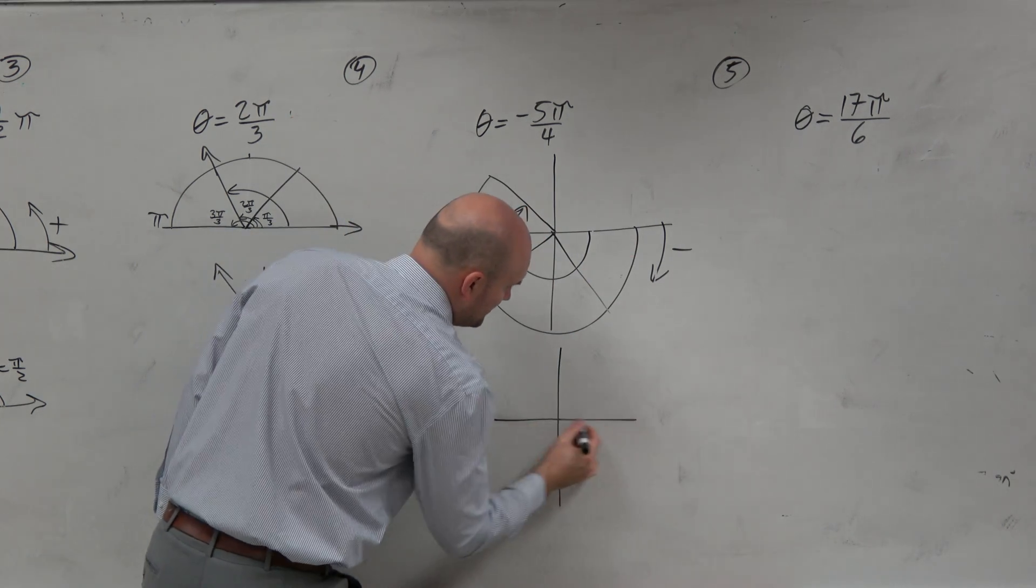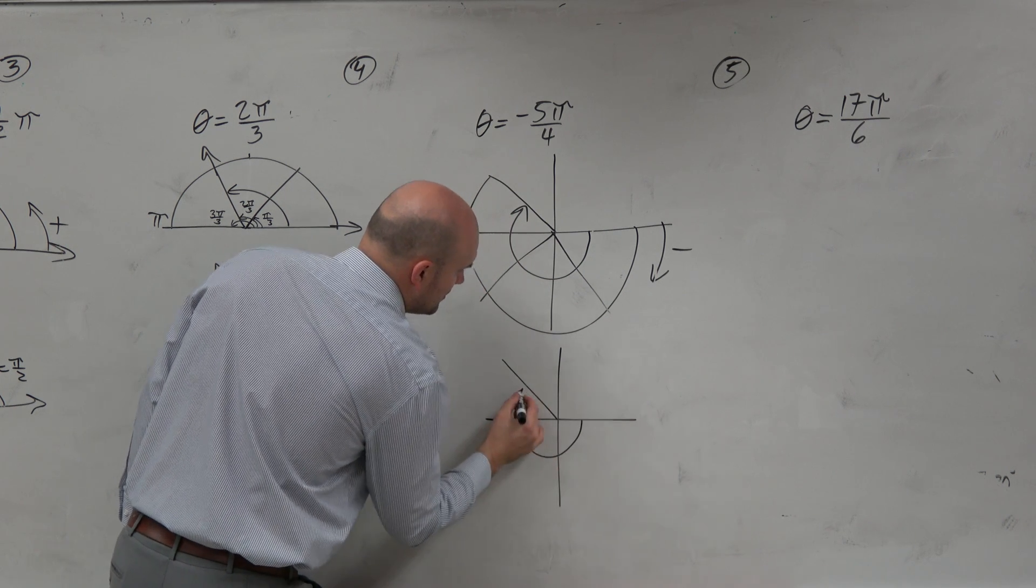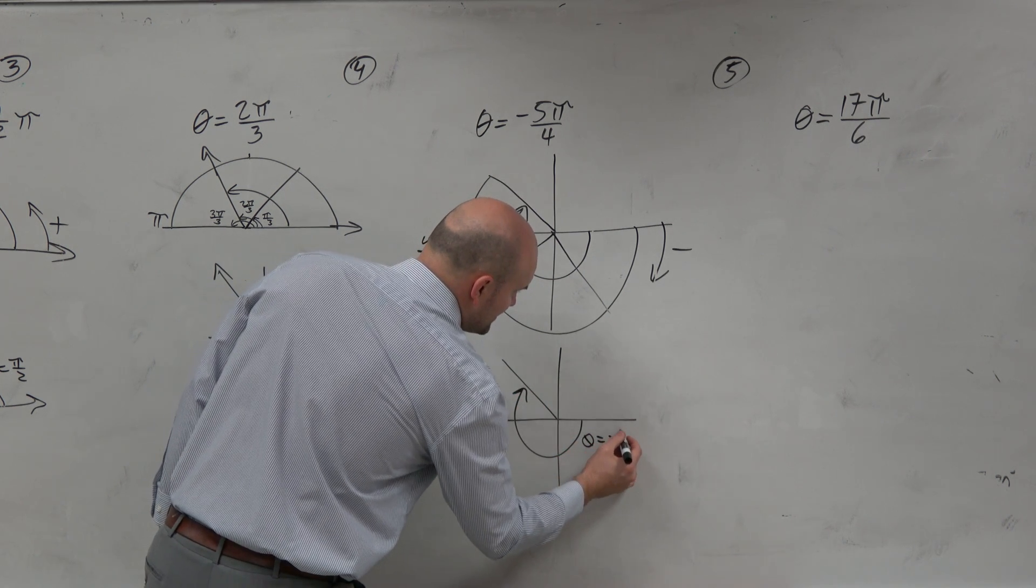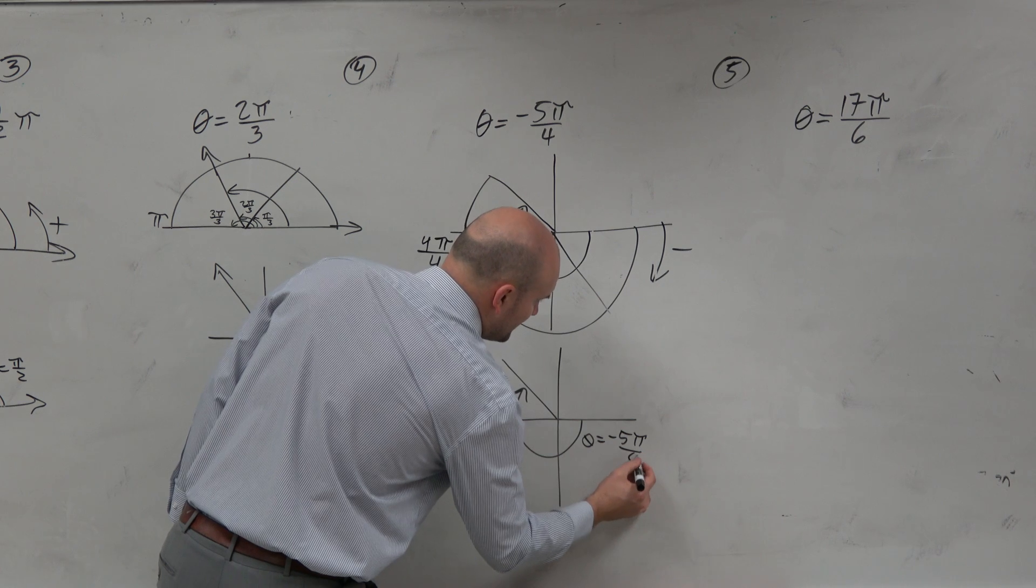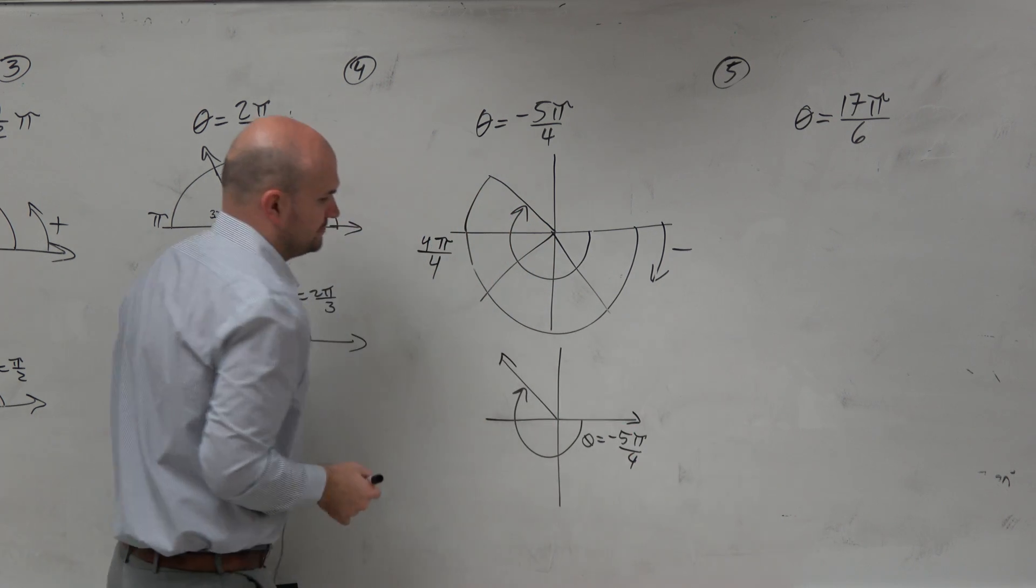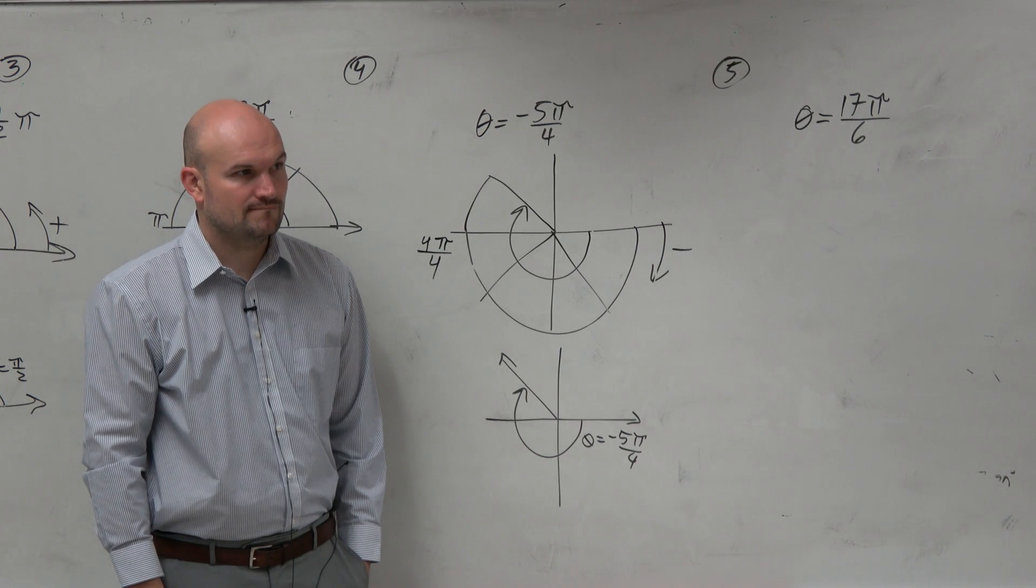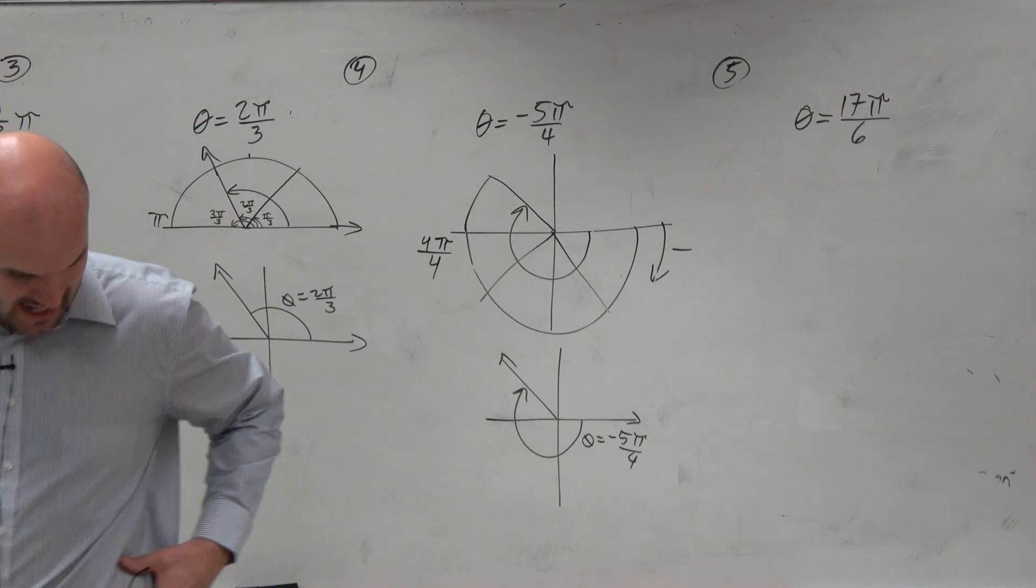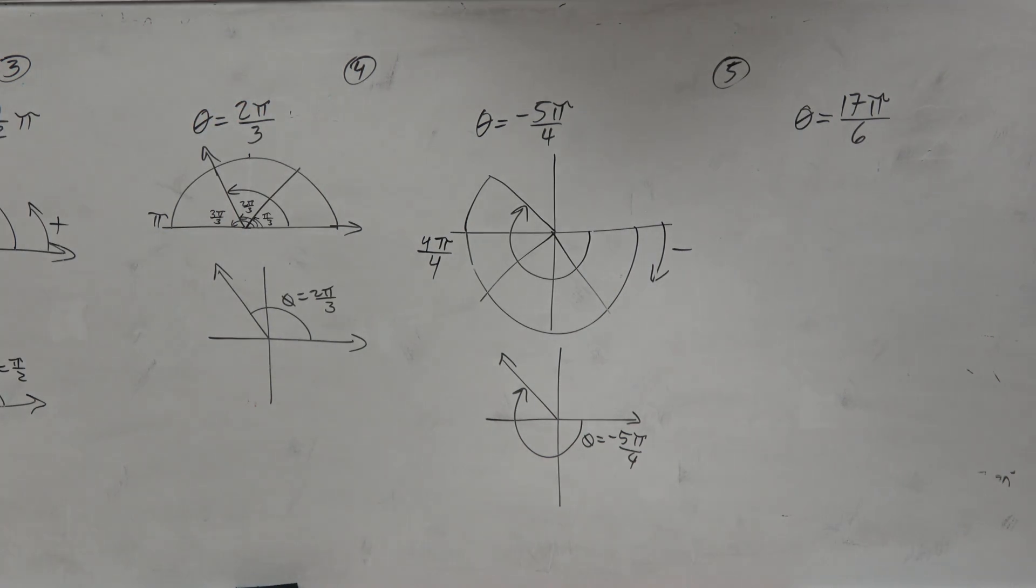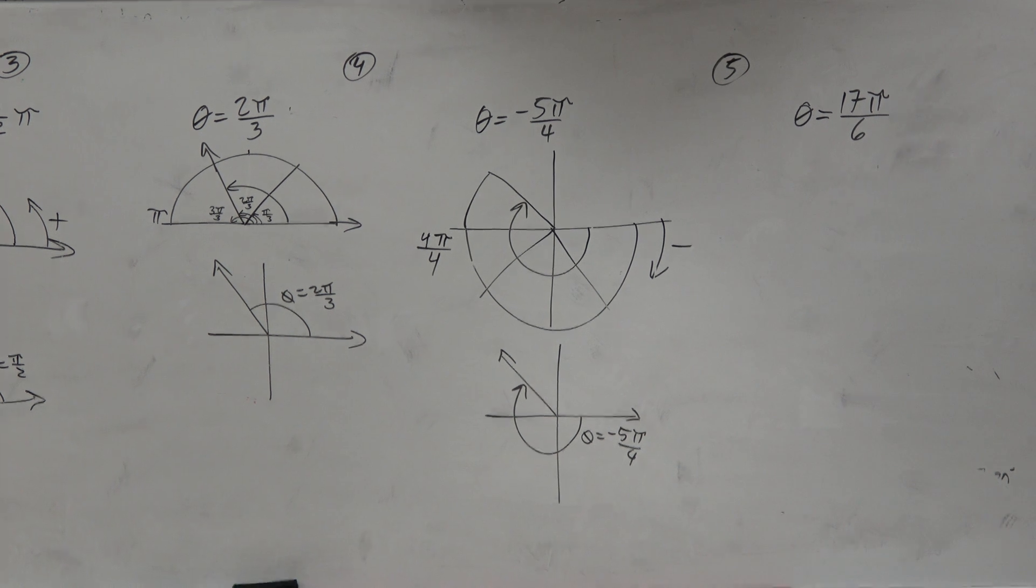So to write the standard form down below, theta equals negative five pi over four. And then our last example that we'll cover here is...